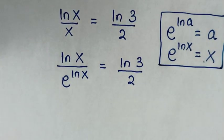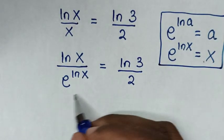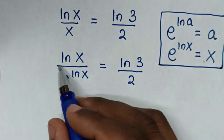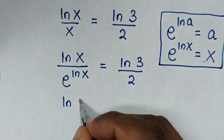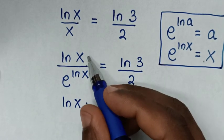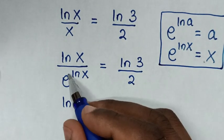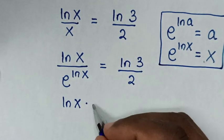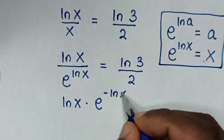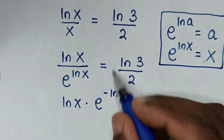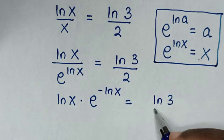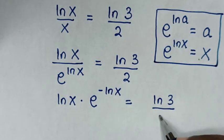Then in the next step, we will move this denominator into the numerator. So it will be ln(x) times e to the power of negative ln(x), and this is equal to ln(3)/2.